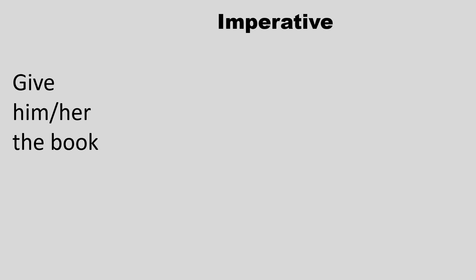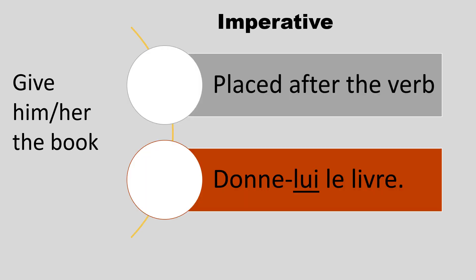However, if we use the imperative and say 'give him the book', the pronoun will have to be placed after the verb. That gives you: donne-lui le livre. You're going to have a little hyphen between the verb and the pronoun. So donne-lui le livre means: give him the book or give her the book.